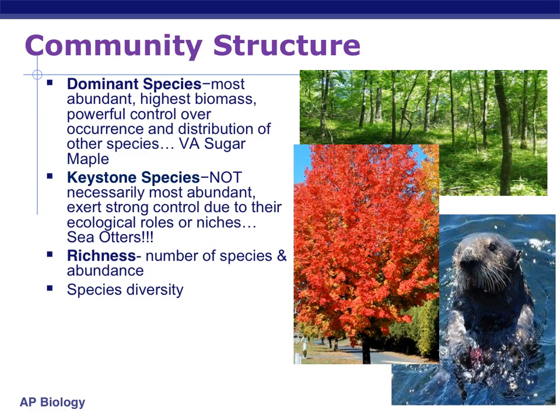In terms of community structure — how everything is put together — we tend to have three main things. The first would be dominant species. Dominant species, just like the name suggests, will be the species that is the most abundant, has the highest biomass, you have lots of them, and they have powerful control over the occurrence and distribution of other species.